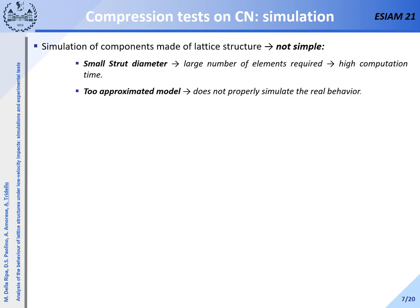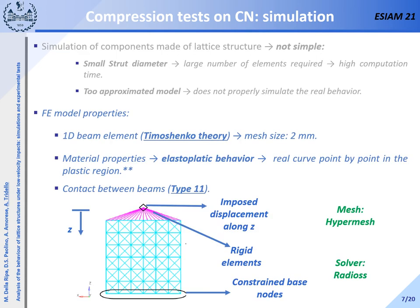The experimental results obtained in this first part of the activity have been used for the validation and calibration of a finite element model. The simulation of the behavior of parts made of lattice structure is not simple. Indeed, in order to model the struts and the nodes, a large number of elements should be used due to the small diameter of the struts, increasing computation time. On the other hand, too simple or approximated models could not be capable of properly simulating the real behavior of the material. In this work, the selected specimen has been simulated using 1D beam elements according to the Timoshenko theory, and an elastoplastic material behavior was considered with the real curve in the plastic range inserted point by point. Moreover, contact between beams was also simulated.